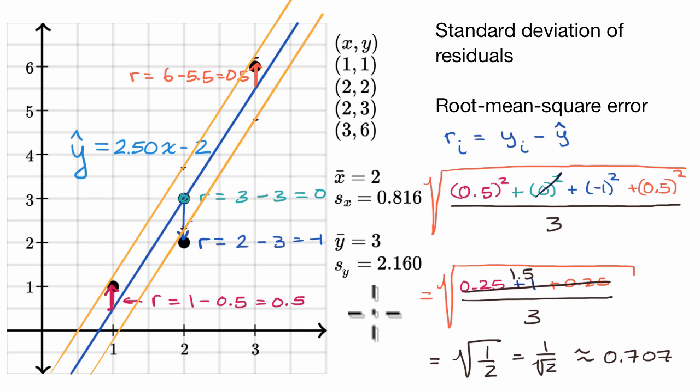Now it's worth noting sometimes people will say it's the average residual, and it depends how you think about the word average. Because we are squaring the residuals, outliers, things that are really far from the line, when you square it, are going to have disproportionate impact here. If you didn't want to have that behavior, we could have done something like find the mean of the absolute residuals.